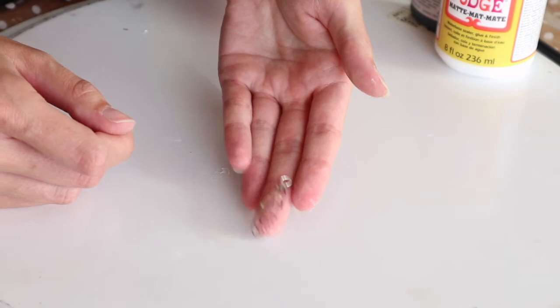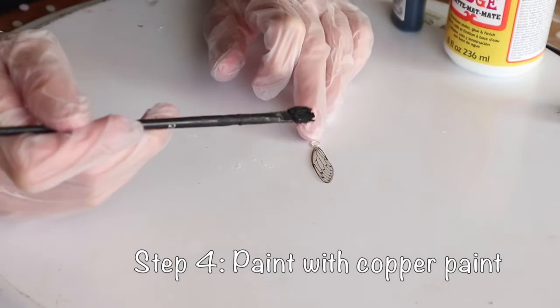When it's dry, you can apply the copper conductive paint. Apply paint on one side and wait for it to dry.